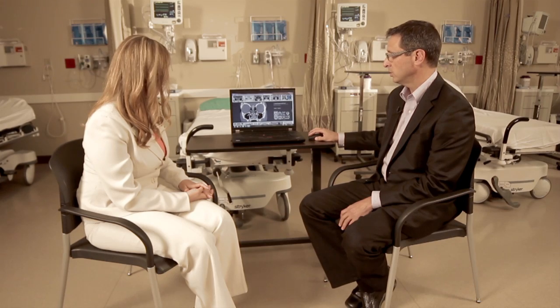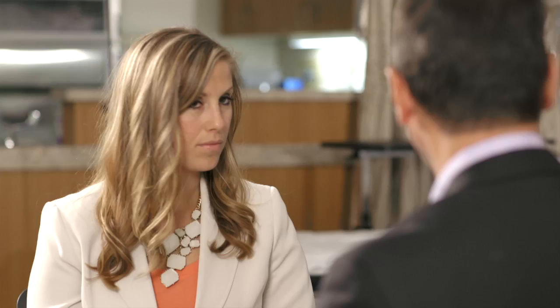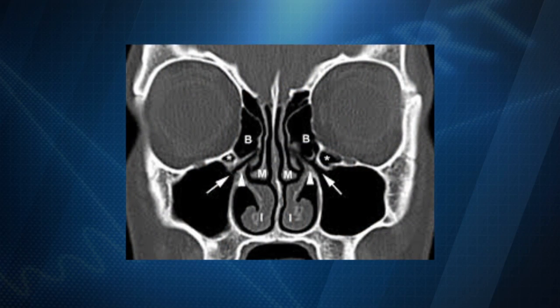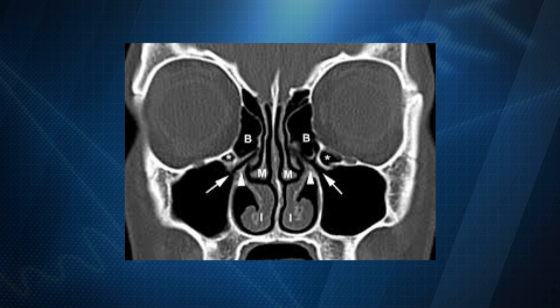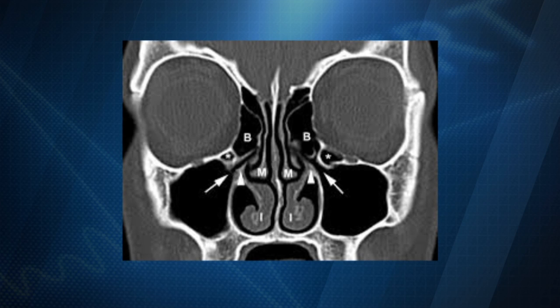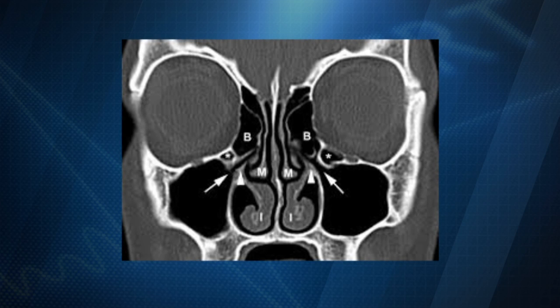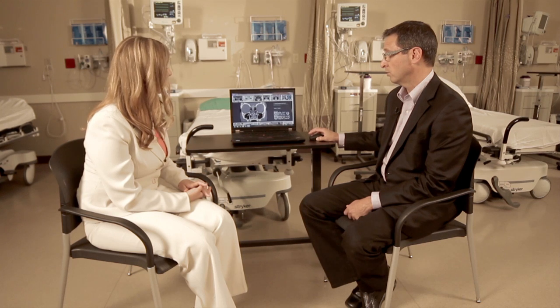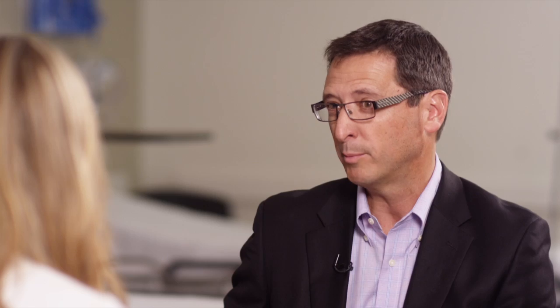Here are the cheek sinuses — these are called the maxillary sinuses. Here are the sinuses between the eyes, which are called the ethmoid sinuses, and there are also sinuses in your forehead and sinuses further back in the middle of the head. These are the sinuses most commonly affected by chronic sinusitis.